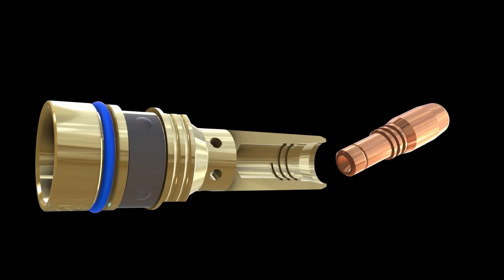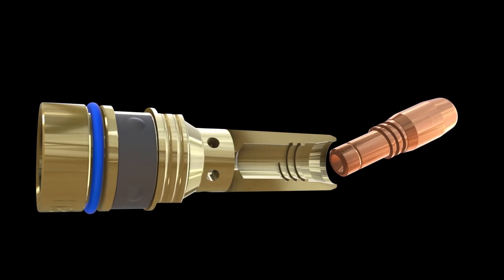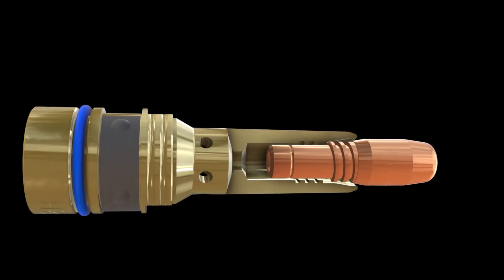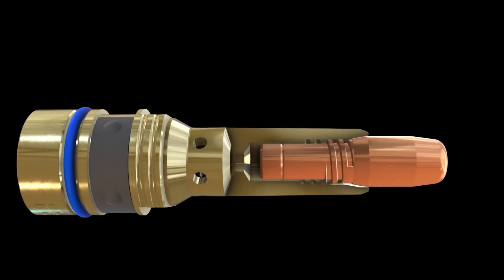The AccuLock Contact Tip's long tail centers it in the diffuser prior to engagement with the coarse, durable thread, making it virtually impossible to cross-thread.